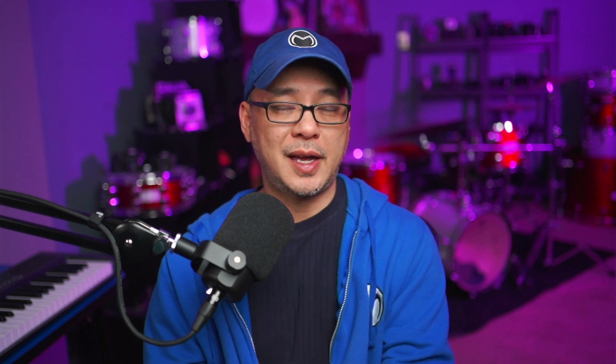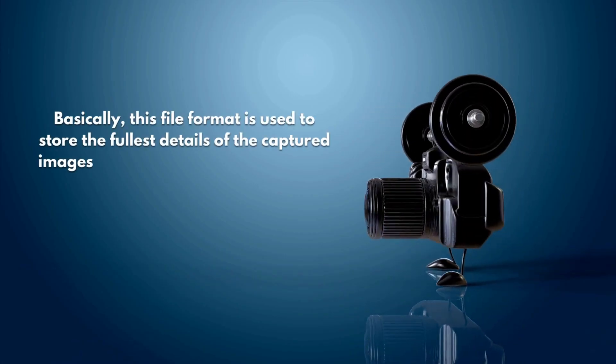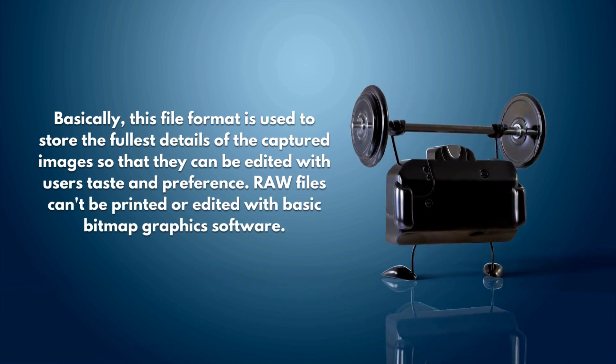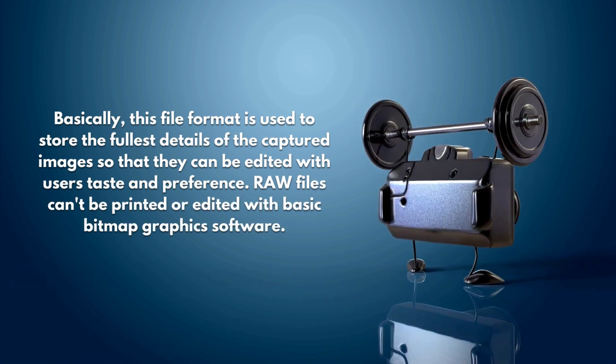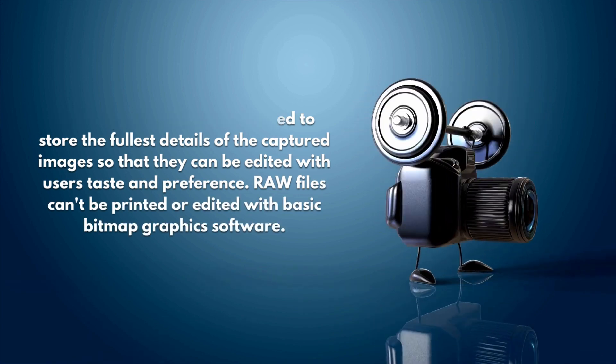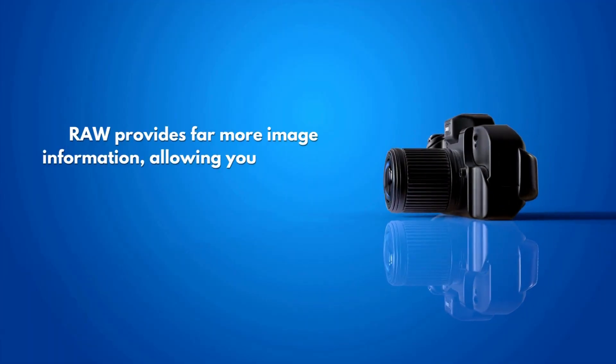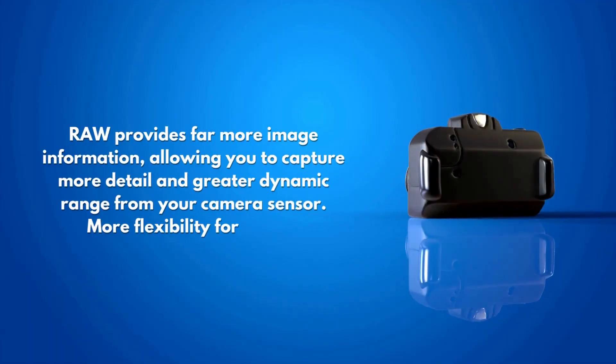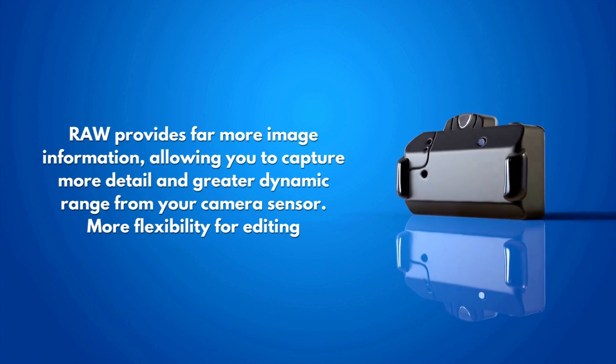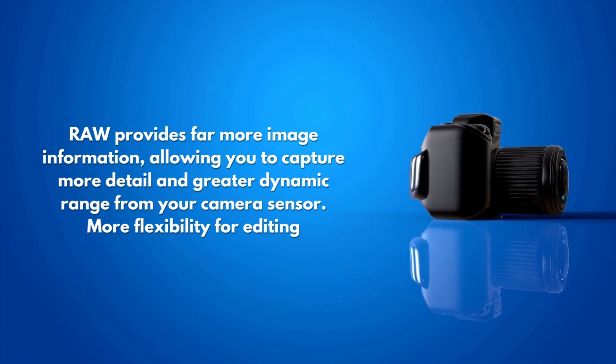Basically what it is, it's the file format that your camera saves its image as. RAW files contain all the original data and have between 12 to 15 stops depending on your camera of dynamic range, which means it has a lot of detail in that file. Whereas a JPEG file size is compressed and often a smaller file size, but it doesn't have as much information to work with.